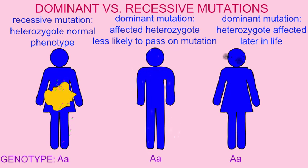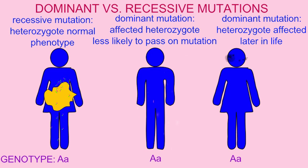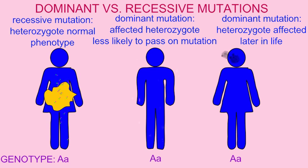In contrast, a dominant mutation will affect the heterozygote. If this mutation has a serious adverse effect, this would mean that the individual who carries the mutation and expresses it would be less likely to survive to adulthood and less likely to have children. Therefore, the mutation would be less likely to become common, given that it was harder to inherit.